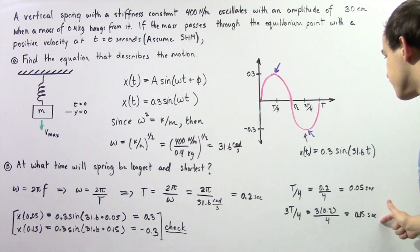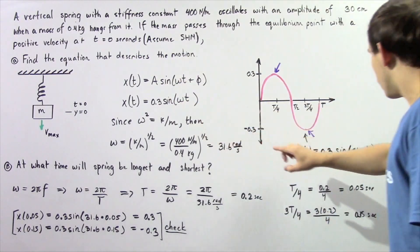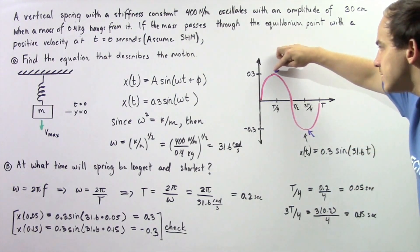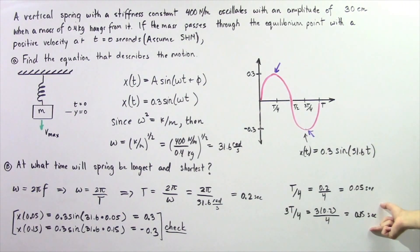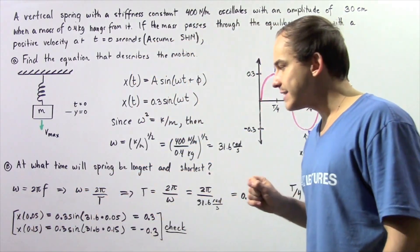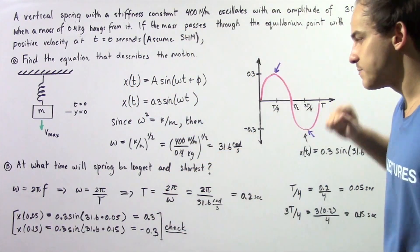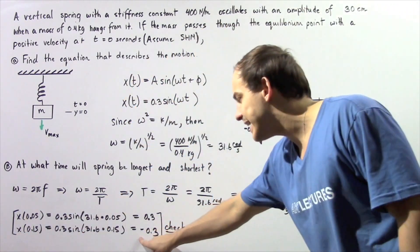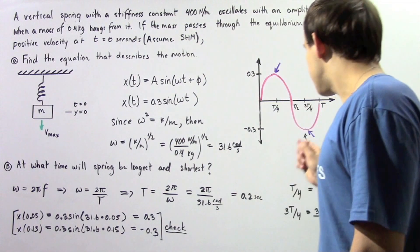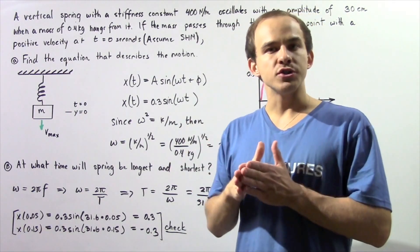At these two time intervals, our spring is longest and shortest. We can verify by plugging these values into our equation. x(0.05) should give us positive 0.3 meters, and x(0.15) should give us negative 0.3 meters. In fact, that is exactly what we get: x(0.05 seconds) = 0.3 meters and x(0.15 seconds) = negative 0.3 meters. So at the times of 0.05 seconds and 0.15 seconds, our spring is longest and shortest — stretched and compressed.